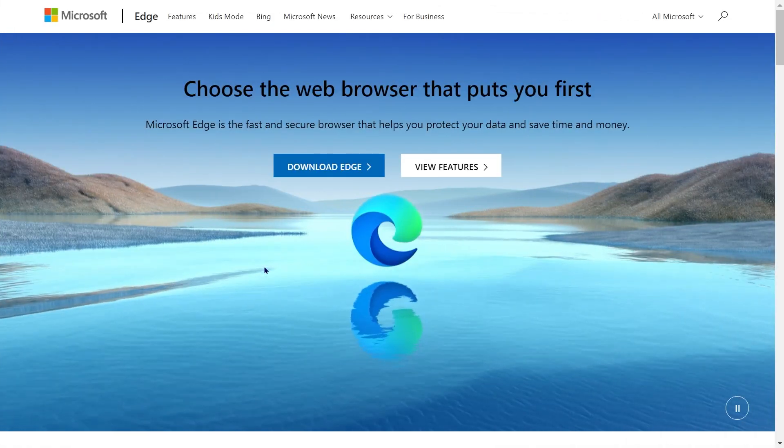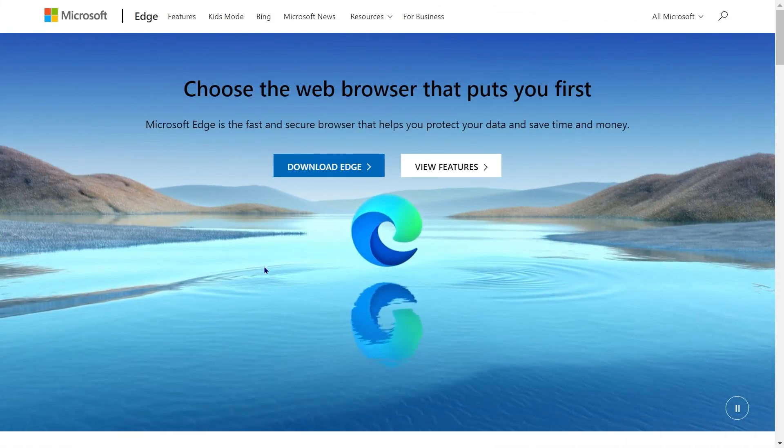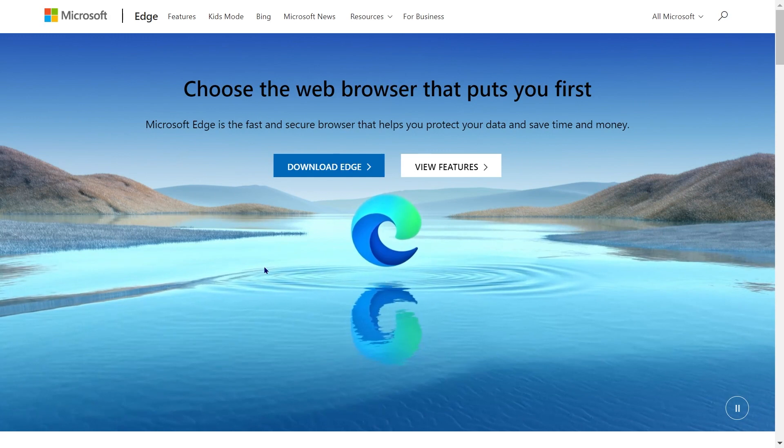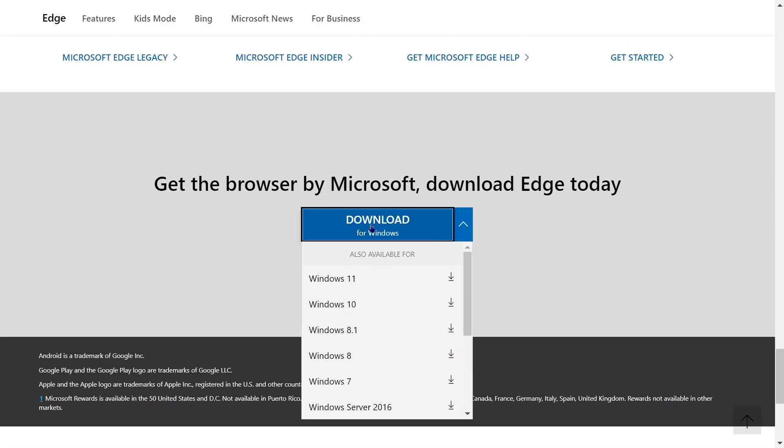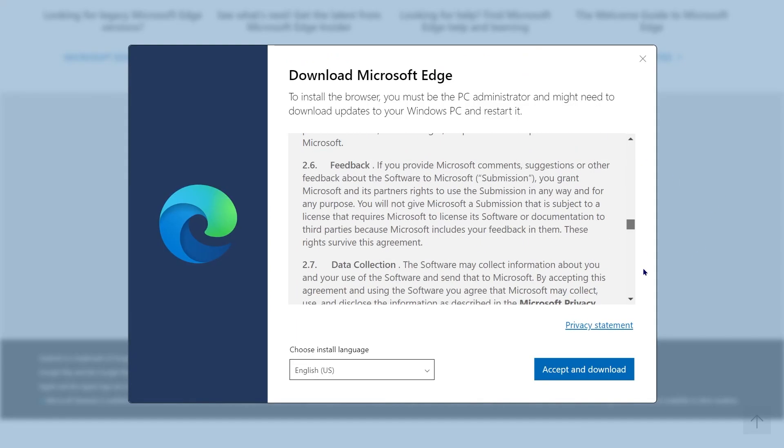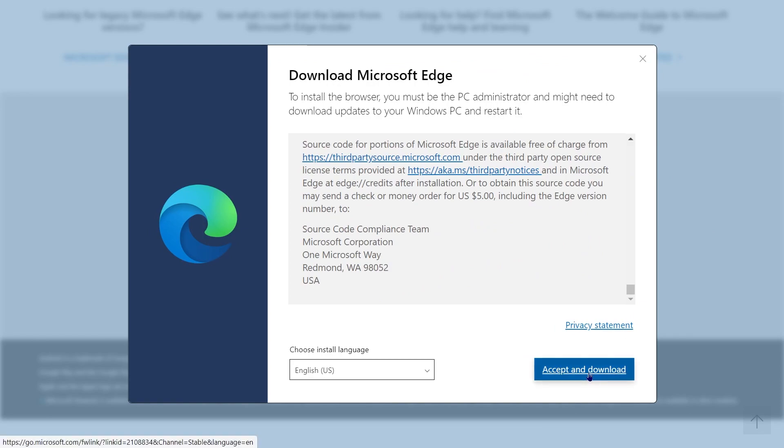In order to open up your PDF in Edge browser, the first step is to download the Edge browser. I will leave a link in the description box below. Once you're on that link, click on download Edge. Go ahead and pick your Windows 11, 10, or 8. Mine is Windows 11. I'm going to click on that. Scroll all the way down, accept and download.